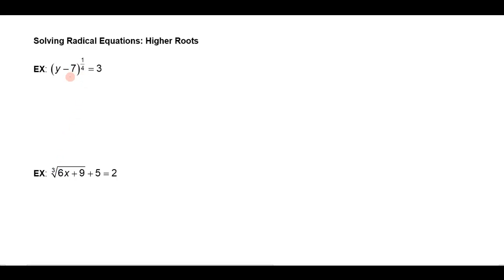Just like when we were solving equations that had square roots, you want to undo the root. If you undo a square root by squaring, you would undo a fourth root by raising both sides to the fourth power. So if I just raise both sides to the fourth power, then this fourth power will undo the fourth root, or the one-fourth power.